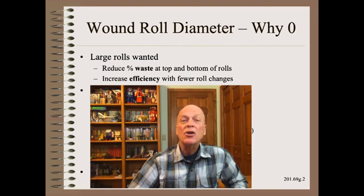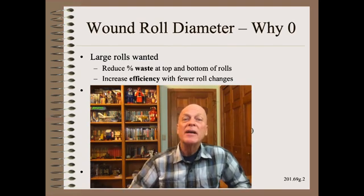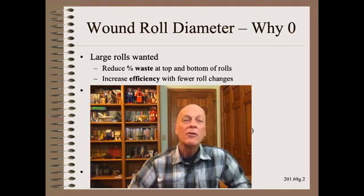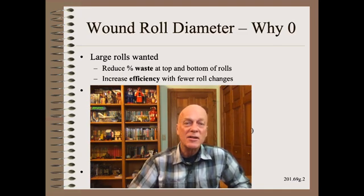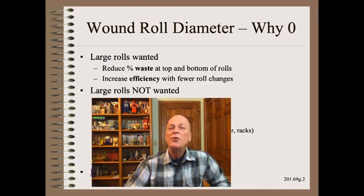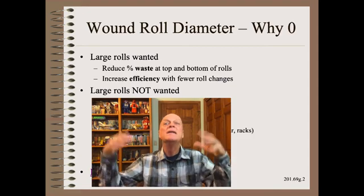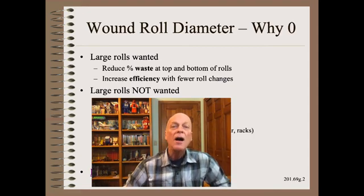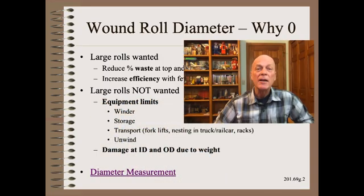The source of roll diameter specification often begins with the tension of wanting large rolls and not wanting large rolls. Specifically, you or your customer may want large rolls because that reduces the percentage of waste that may be seen at the top and/or bottom of the rolls. Furthermore, it can increase system efficiency with fewer roll changes. However, few people want rolls that are 10 feet in diameter, and no one wants rolls that are 100 feet in diameter. The reason is equipment limits.